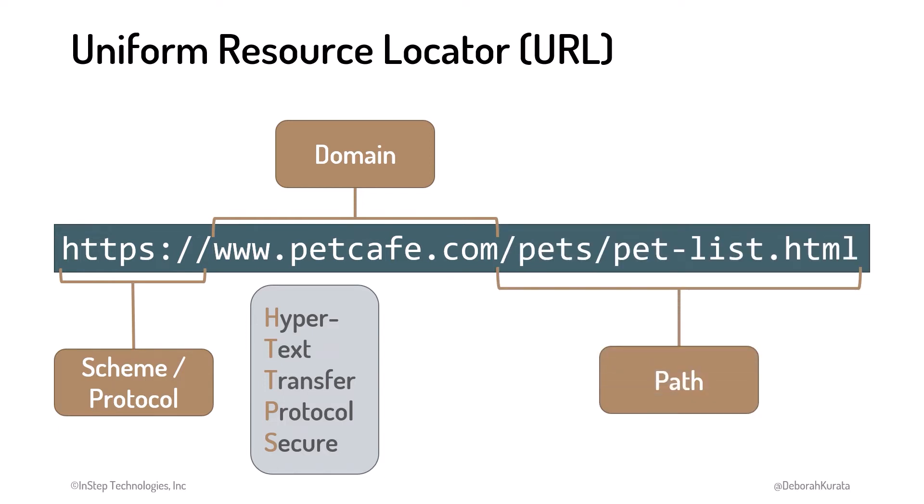After the domain name is an optional path to a file on the web server. This is the file containing the web page, image, or other resource. If no file name is provided, by default the web server looks for a file named index.html. In many cases, the path is not necessarily a physical path on the web server, but rather a logical name used to find the file or other resource. Think of the domain as the building's address, and the path as the location of a specific room within that building.